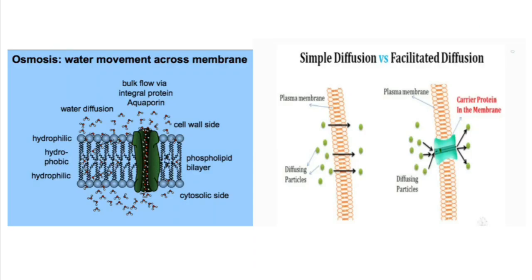This slide shows osmosis, which involves water movement across the membrane — water moves from a region of lower solute concentration to a region of higher solute concentration. Bulk of water is also diffused across the membrane through protein channels. The next image shows the difference between simple diffusion and facilitated diffusion: in simple diffusion molecules move along the concentration gradient, whereas in facilitated diffusion molecules diffuse with the help of a carrier protein in the membrane.